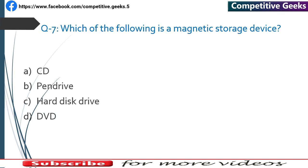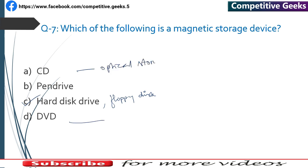Number 7: Which of the following is a magnetic storage device? The answer is C — Hard Disk Drive. Hard disk drive and floppy disk are magnetic storage devices. CD and DVD are optical storage devices. Pen drive and memory card are solid state storage devices.